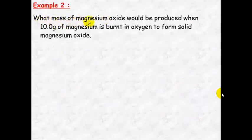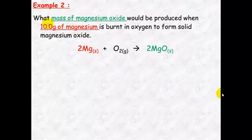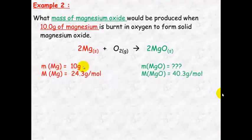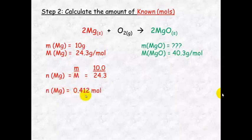A second example. What mass of magnesium oxide would be produced when 10 grams of magnesium is burnt in oxygen to form solid magnesium oxide? First step: write a balanced chemical equation. Second step: look at the information in the question. It's telling you there's 10 grams of magnesium — this is your known amount — and it's asking you to find what mass of magnesium oxide will be produced, so magnesium oxide is your unknown. We know the mass is 10 grams and the molar mass of both magnesium and magnesium oxide from the periodic table.